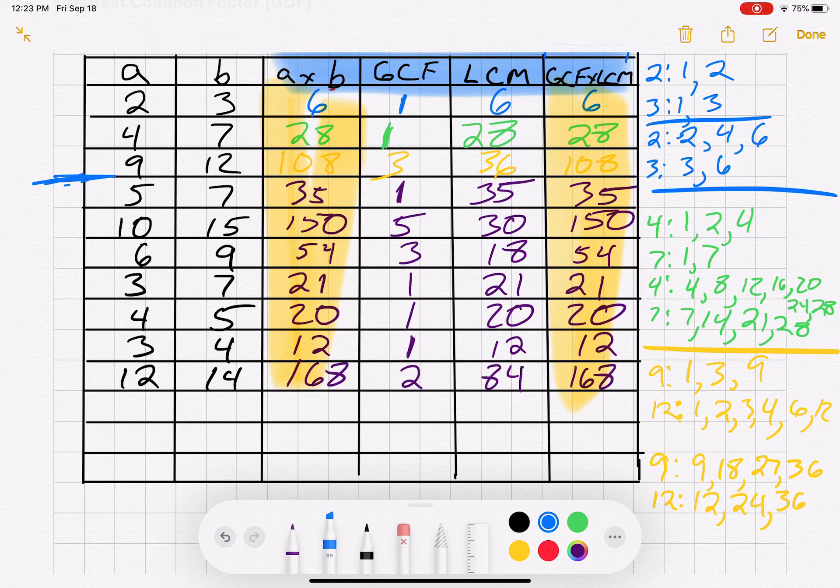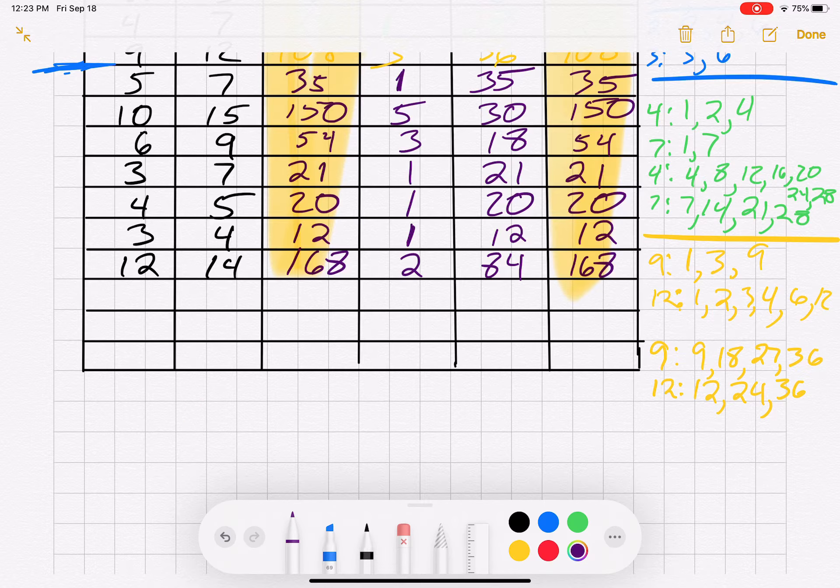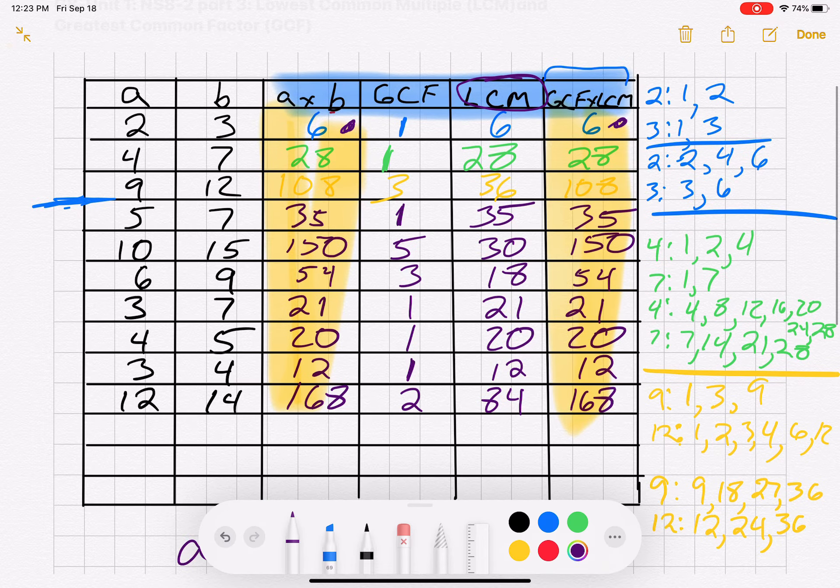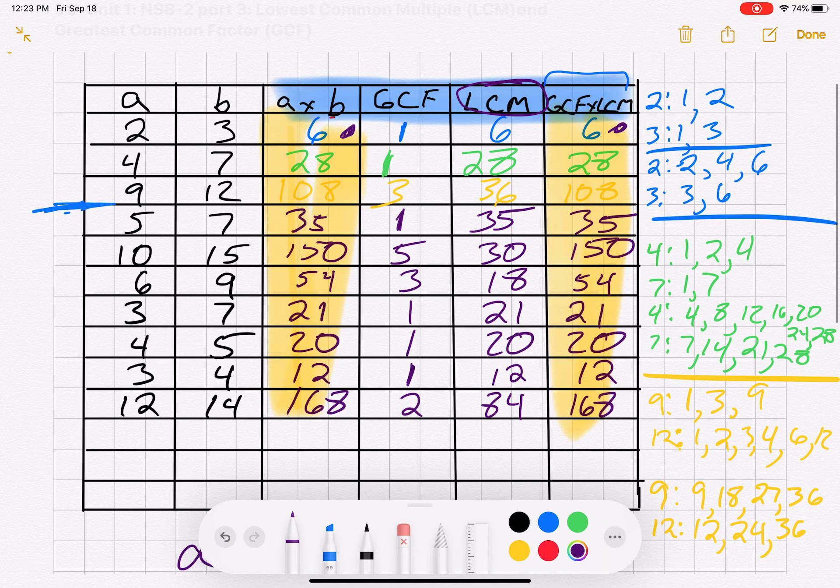So if these are the same, and I want to end up with the lowest common multiple as the answer, I can say that A times B, and then, so in order to get this answer, I multiplied the greatest common factor and the least common multiple together.